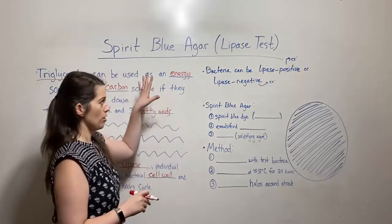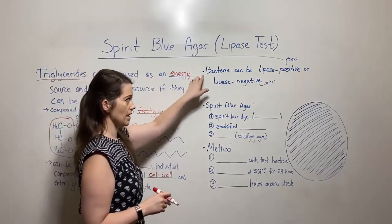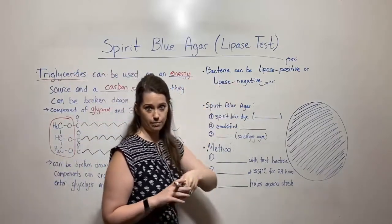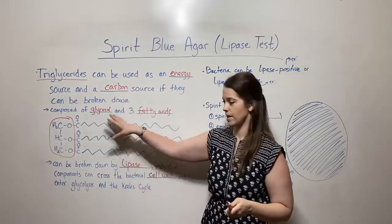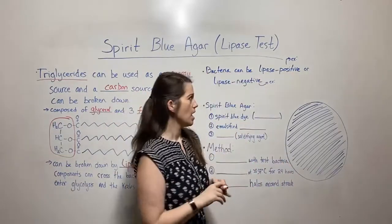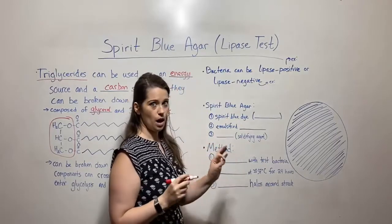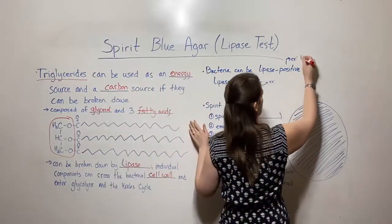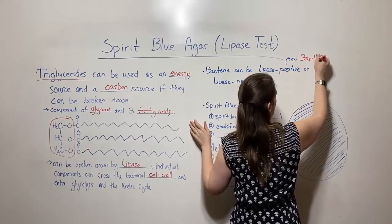Now let's talk more about spirit blue agar. Bacteria can be either lipase positive, meaning they have this enzyme, so they can break down triglycerides and use them for energy and carbon. An example of a lipase positive bacterium would be Bacillus subtilis.